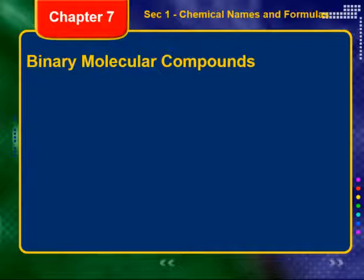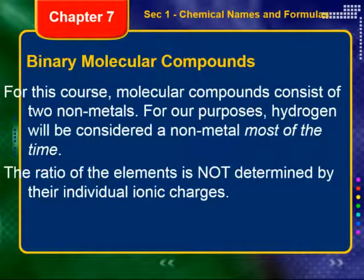Binary molecular compounds. For this course, molecular compounds consist of two non-metals. There are some exceptions, but for our purposes it's two non-metals. And for our purposes, hydrogen will be considered a non-metal. It's a non-metal most of the time — it can actually act like a metal sometimes. We'll talk a little bit about that during oxidation numbers, but it won't be a big part of this course. So most of the time, it's a non-metal.